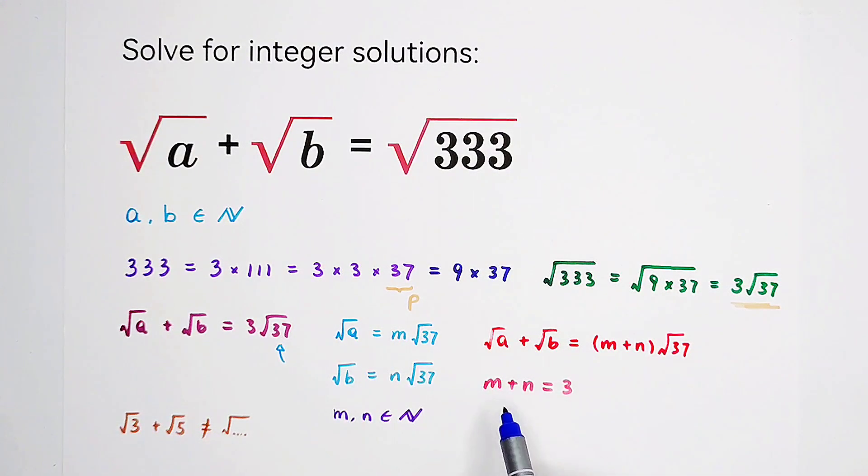m is 0, n is 3. m is 1, n is 2. m is 2, n is 1. m is 3, n is 0.